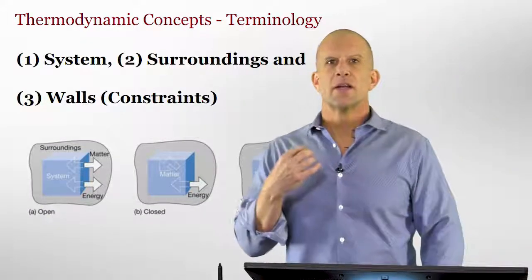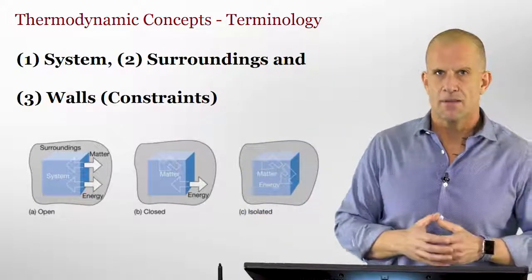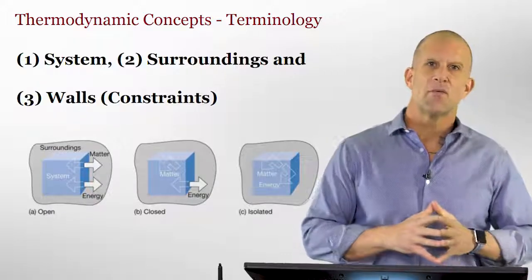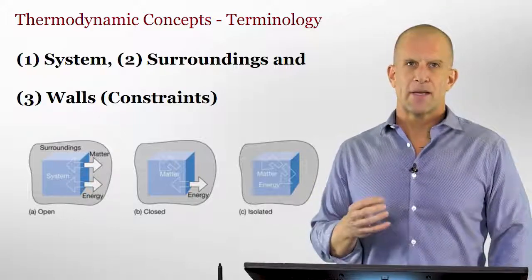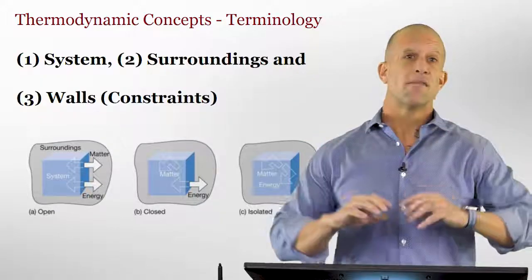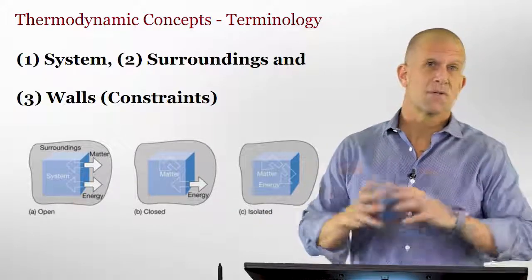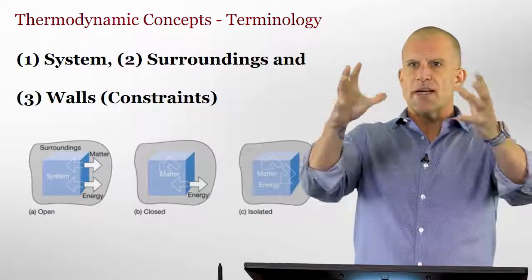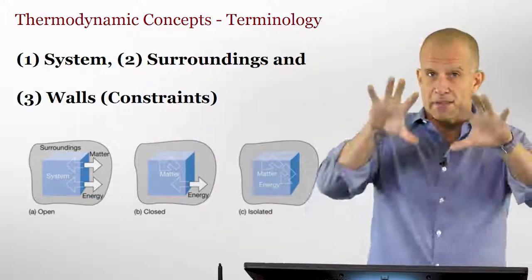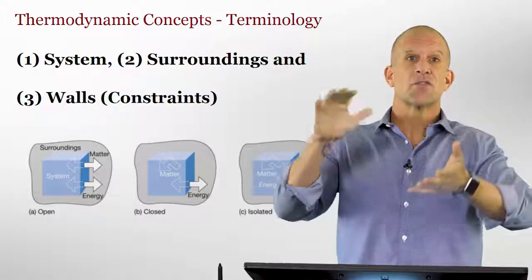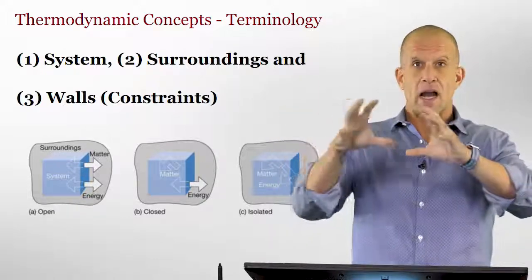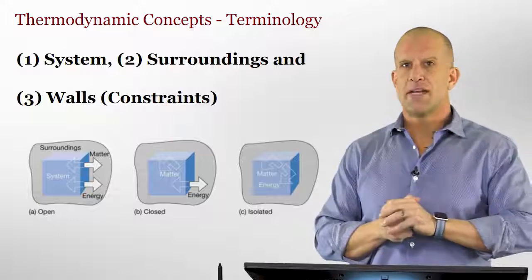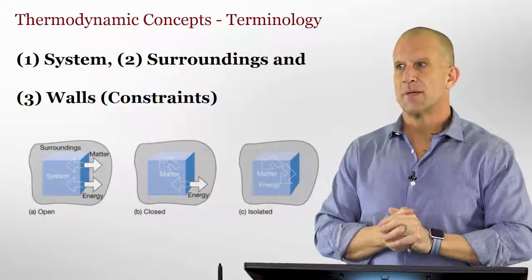Let's introduce some of the concepts by getting some vocabulary and terminology. Usually when we're talking about thermodynamics, we define a part of the universe that we're interested in looking at — we'll call that the system. Everything else in the universe we'll call the surroundings. And usually there's something that constrains or divides the system from the universe — sometimes imaginary, sometimes real. Those constraints or walls often define a lot of the vernacular we use in thermodynamics.